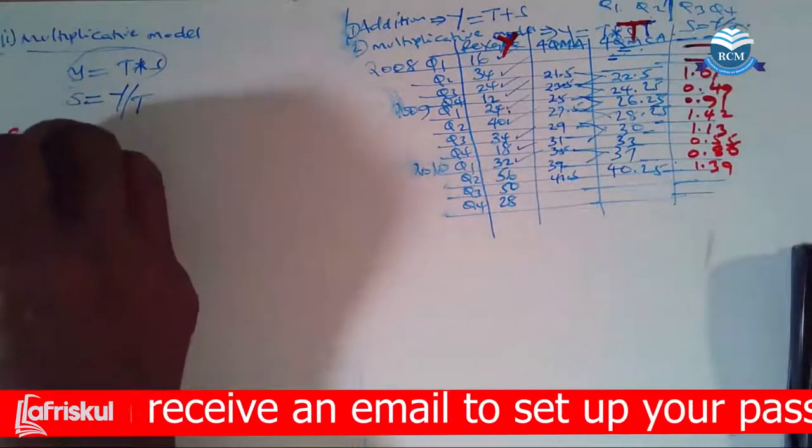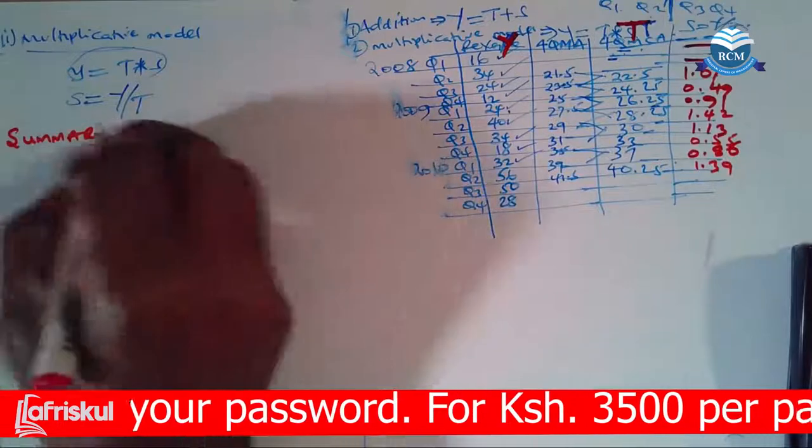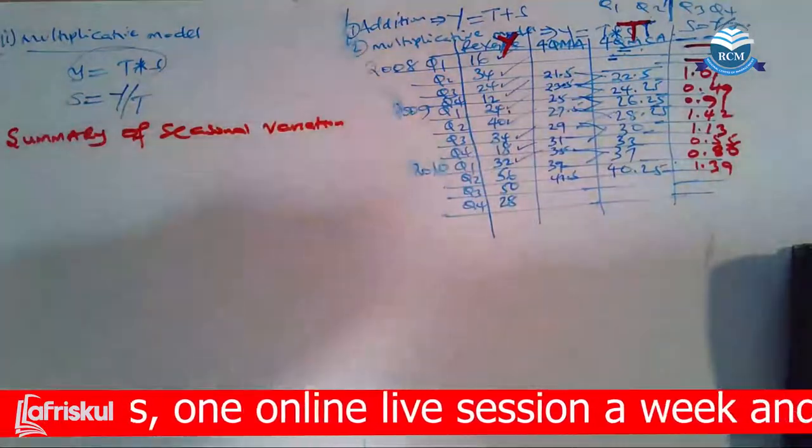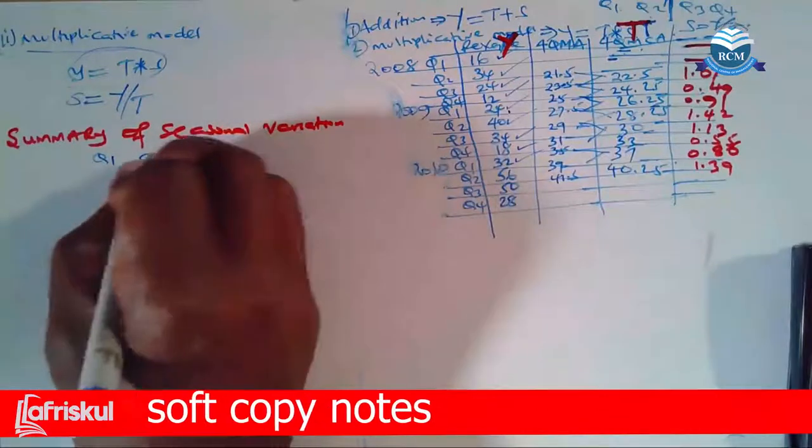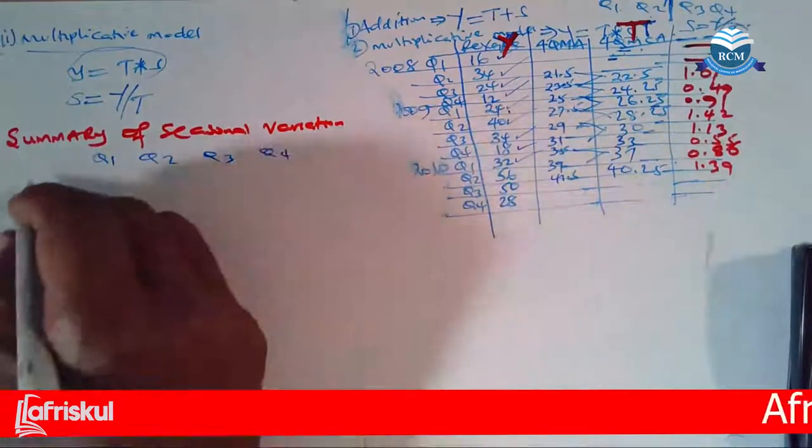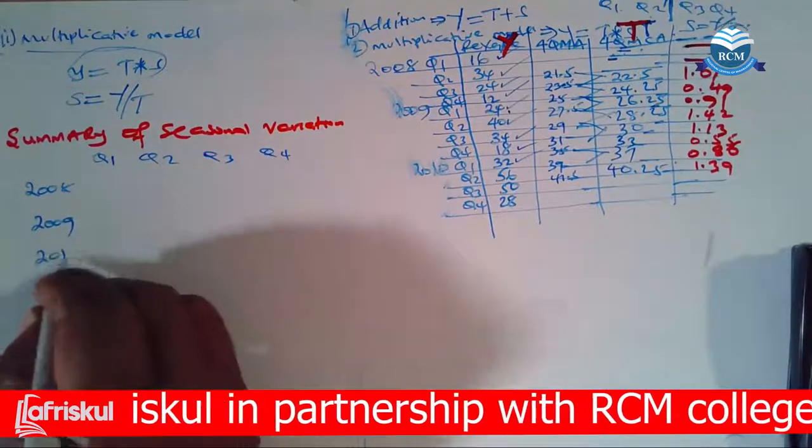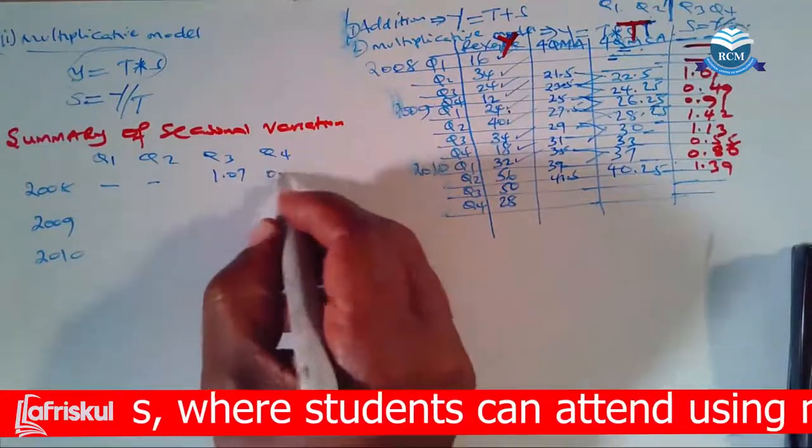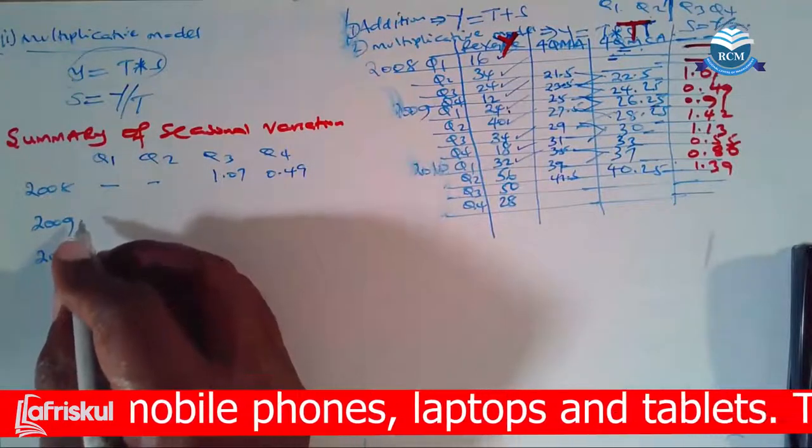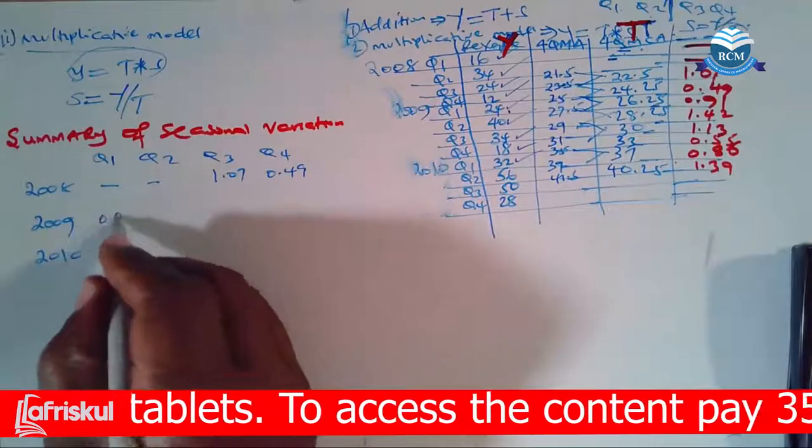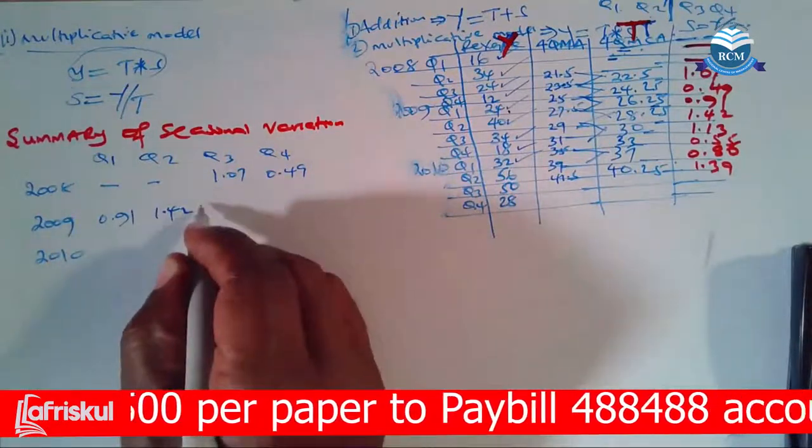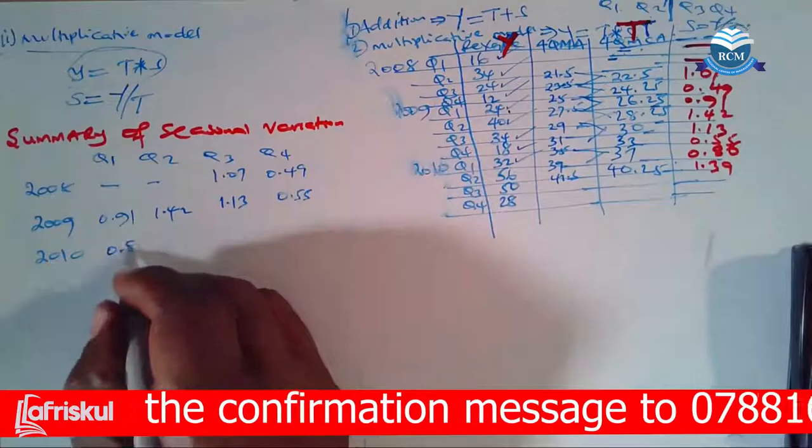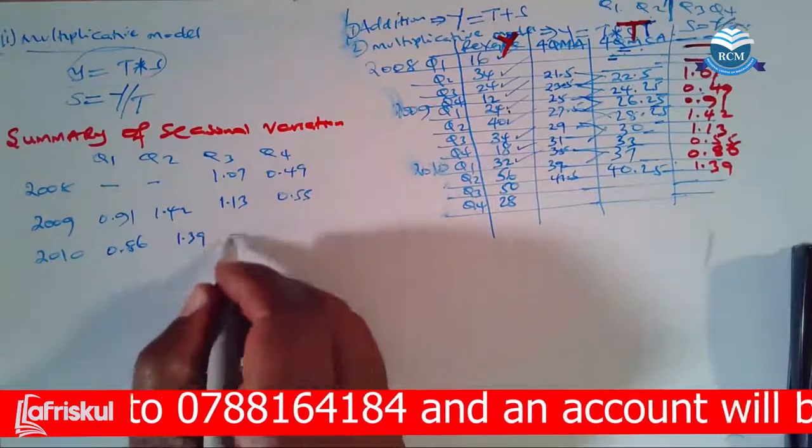After you do that, come and give us a summary of seasonal variations. How will this look like? Very easy. So we have our four quarters being column titles. So we have 2008, we have 2009, we have 2010. So 2008 here, we have dash, dash, quarter three we have 1.07, 0.49. 2009, I can see 0.91. Then 1.42, 1.13, 0.55. And then we have 0.86, 1.39, and then dash, dash like that.